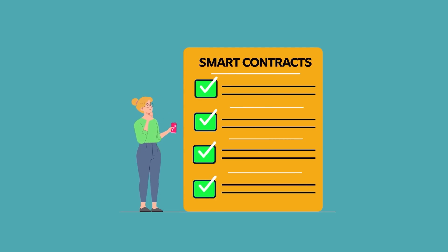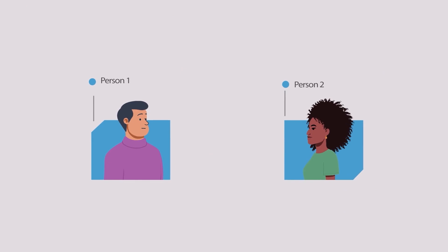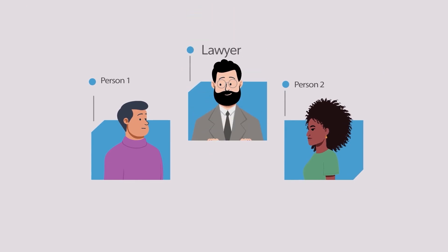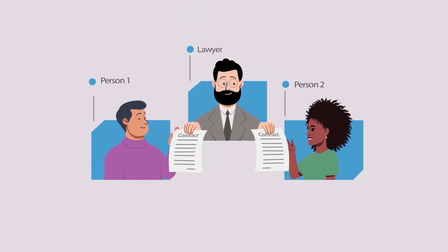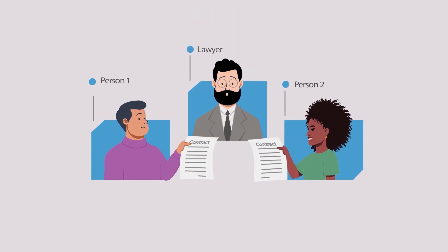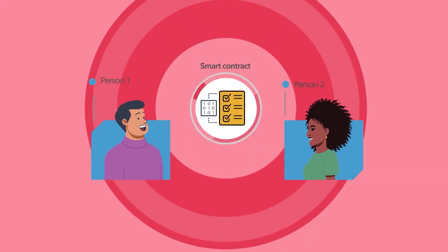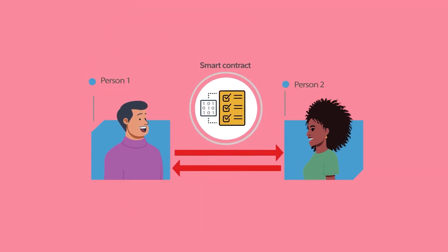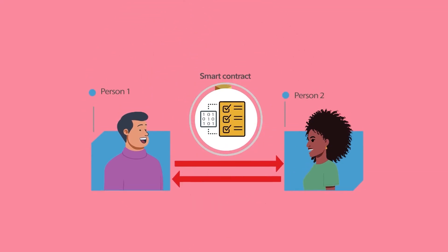Let's break it down. Simply put, contracts are agreements that usually need a third party, like a lawyer, to authorize and ensure both parties are holding up their end of the terms. But "smart" refers to their digital existence, automated nature, and independence from a third party.